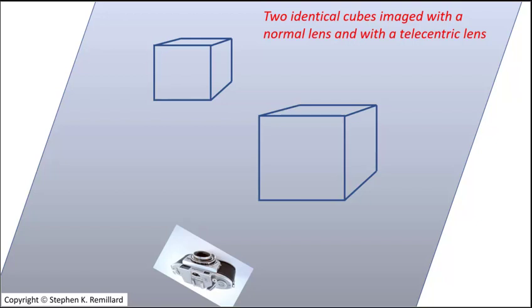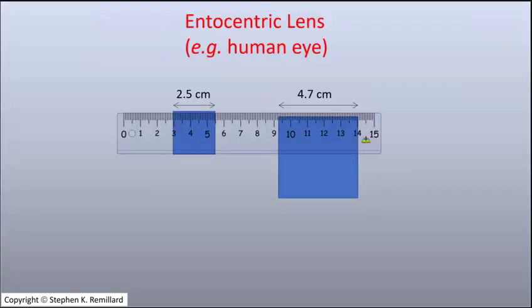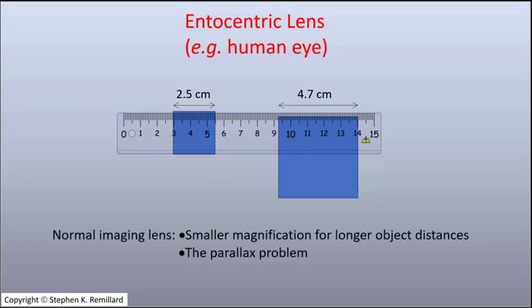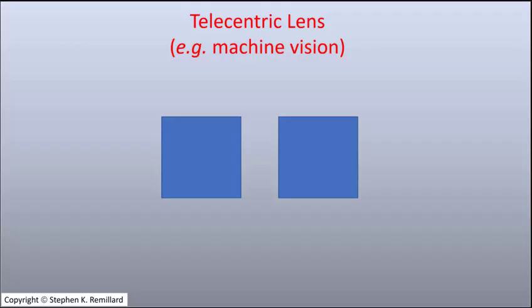If you want to measure the sizes of cubes, and all you have is a camera and a ruler that is fixed in place between the camera and the objects, you might capture an image of the ruler in front of the cube and try to match the lines of the ruler with the edges of the cube. You can expect to get a more accurate read on the cube that is closer to the ruler — certainly due first to the fact that the farther cube has smaller magnification and thus appears smaller on the image surface, and second to the problem of parallax, which results from the edges of the distant cube not lining up with the correct lines on the ruler.